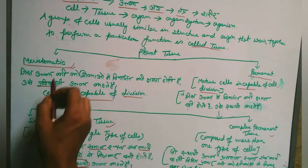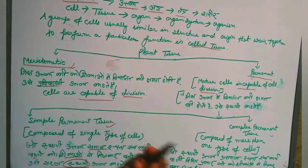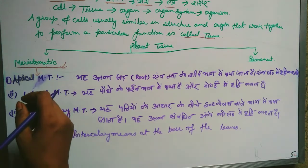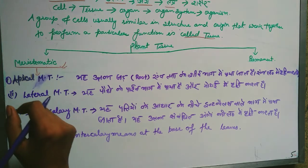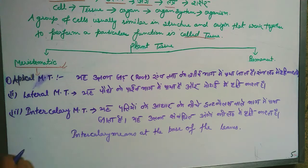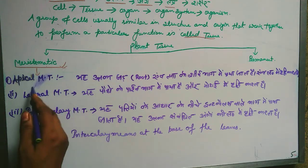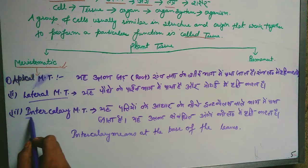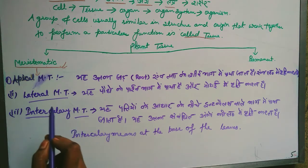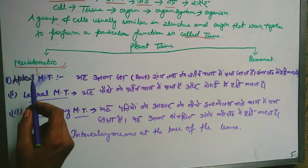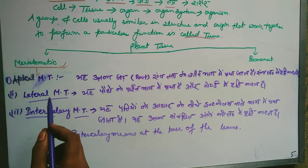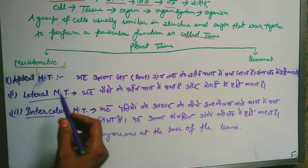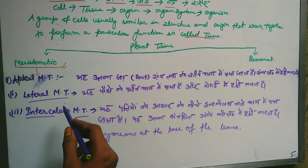Now we will see how many types of Meristematic Tissue there are. There are three types of Meristematic Tissue: Apical Meristematic Tissue, Lateral Meristematic Tissue, and Intercalary Meristematic Tissue. In Hindi, these are called Agrastha, Parsva, and Antarveshi respectively. Intercalary means Antarveshi.